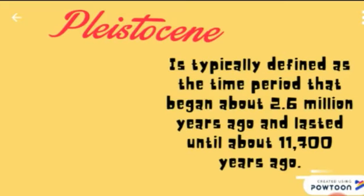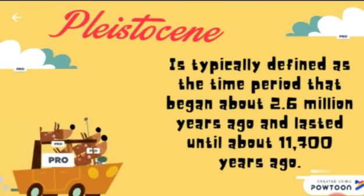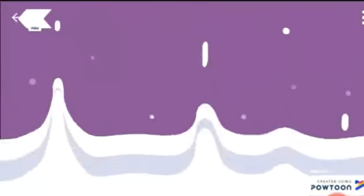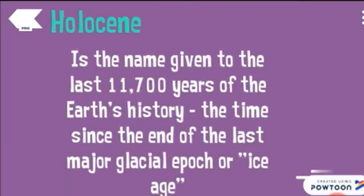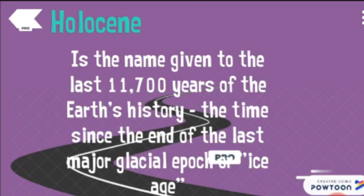The Pleistocene Epoch is a defined time period that began about 2.6 million years ago and lasted until about 11,700 years ago. The Holocene Epoch is the name given to the last 11,700 years of Earth's history — the time since the end of the last major glacial epoch, or Ice Age.